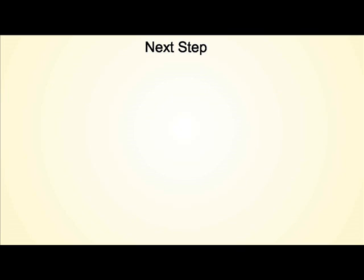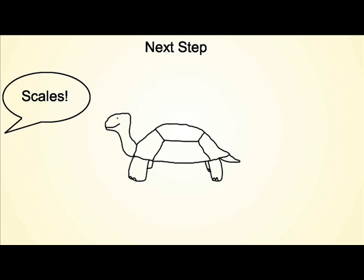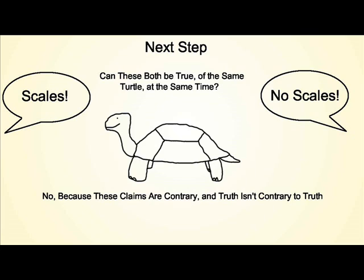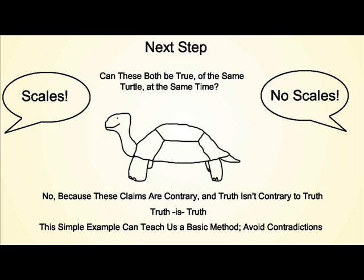Now for the next step. Suppose that I say a turtle has scales, and you say it has no scales. Can both of these things be true of the same turtle at the same time? No, because these are different things, and truth is not contrary to truth. Truth is truth. From this simple example, we can learn our first method for identifying truth: avoid all contradictions.